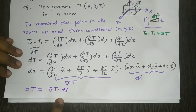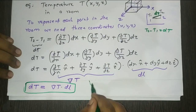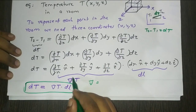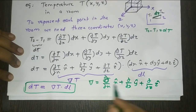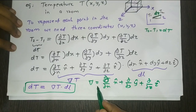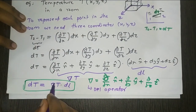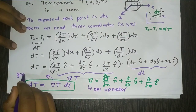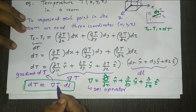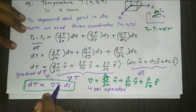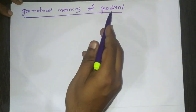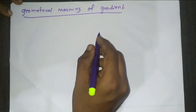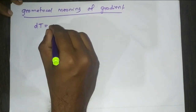We have dT = del T · dl, where del is the gradient operator. Now we recognize the term: gradient of temperature, or gradient of potential, which is a scalar quantity. Now let us look at the geometrical interpretation — the geometrical meaning of gradient. Let us look at the expression del T · dl.